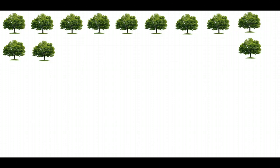Go ahead and pause the video and see how many different ways you can come up with to order 12 trees in equal rows and columns. The rows and columns don't have to be equal to each other, but each row must have the same number of trees and there cannot be any trees left over. Pause the video, see what you can do, and come back when you're ready.